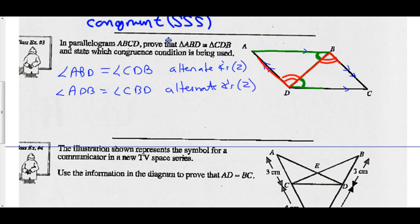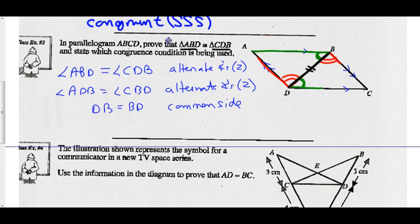In the two triangles ABD and CDB, side DB is common, so DB equals BD — it's a common side and must be equal. So now I have angle-side-angle. Therefore triangle ABD is congruent to triangle CDB, just as we were asked to prove. The reason it's congruent is the ASA congruency condition.